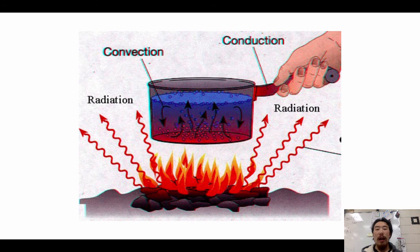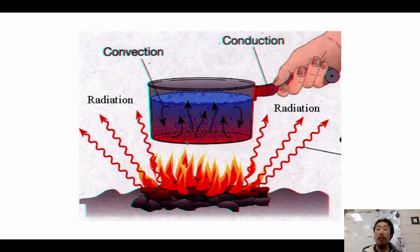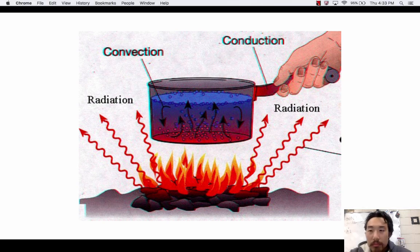Here's a final graphic wrapping up the three ways of heating: the fire radiates out heat; in the water, the bottom part is hot and the top is cold, showing convection; and the heat travels through the metal into the handle by conduction — and that person just got burnt. Thanks for watching — I hope you do well on your exam.